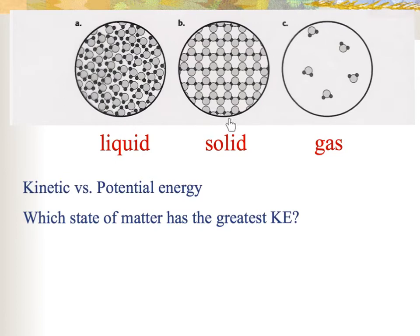Let's first talk about solids. Here's a picture of a solid. Notice in that picture the particles are organized — they're kind of stuck in the structure. We call that being rigid. So it's organized, it's very rigid, and the particles are not able to move around freely, but they do vibrate some at those fixed points.